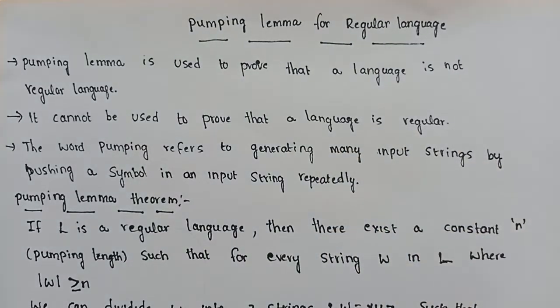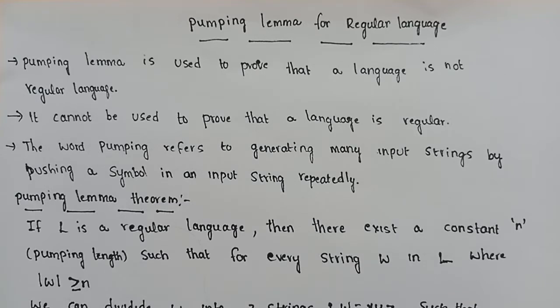A regular language is one that a finite state automaton machine can accept. A language accepted by finite automata is called a regular language.